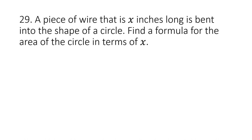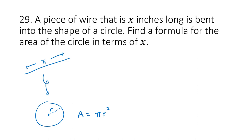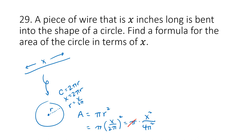Similarly, if the wire is bent into a circle: the area formula is πr², but we need it in terms of x. The circumference equals 2πr equals x, so r equals x/(2π). Plugging in: area equals π times (x/2π)² equals π times x²/(4π²) equals x²/(4π). One π divides out, leaving x²/(4π) as the area in terms of x.